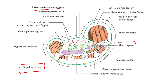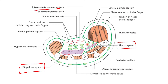Moving on to the thenar space, which is the potential space lying deep to the thenar eminence and the thenar muscles. The anterior relation of this thenar space is mainly the three thenar muscles: the abductor pollicis brevis, the flexor pollicis brevis, and the opponens pollicis. Posteriorly, it is resting on the adductor pollicis muscle.